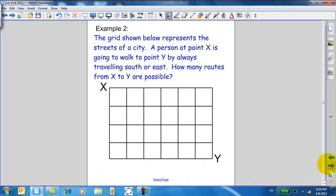Now, example 2. The grid shown below represents the streets of a city. A person at point X is going to walk to point Y by always traveling south or east. Let's get a little grid up here. This is north, east, south, west. So, for instance, they might go a couple blocks this way and then decide to go down and then over and then maybe down twice and then over and then down and then over. That would be east, east, south, east, east, south, south, east, south, east.